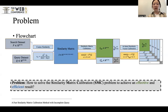However, incomplete observations are ubiquitous in real scenarios, leading to a less accurate similarity matrix and further resulting in inaccurate similarity search results. Here we aim to provide an effective and efficient algorithm to solve the similarity matrix completion problem.